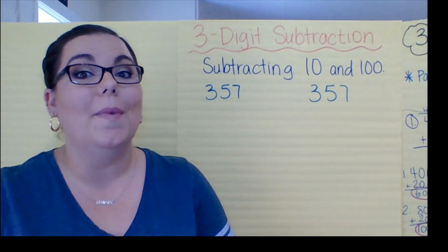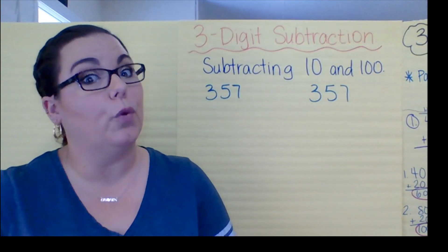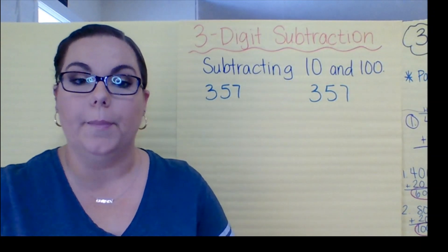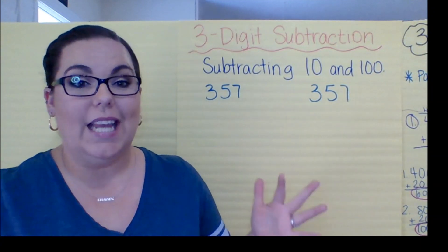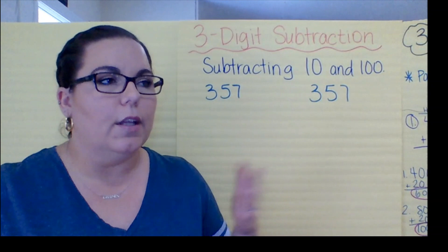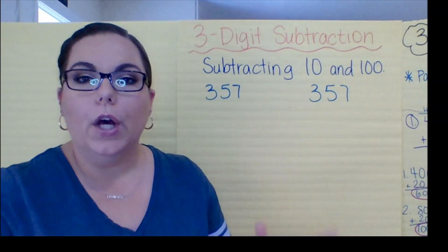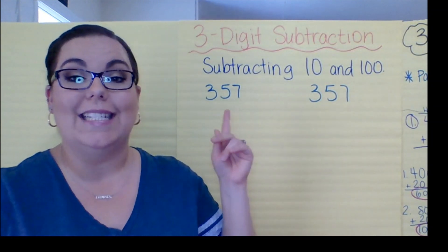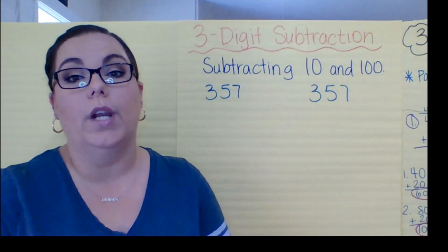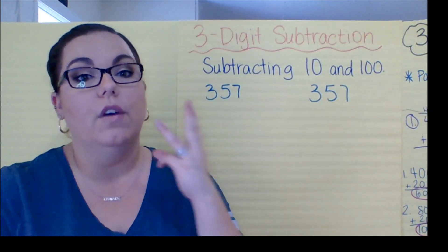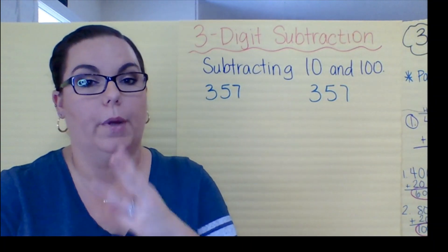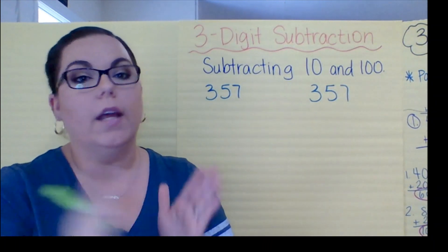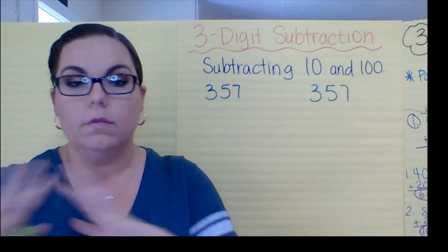We're also going to learn how to use the standard algorithm and to regroup with three digits. For today it's a little bit easy — we're going to start off kind of slow and just do subtracting 10 and 100 from three-digit numbers. That's it — simple, either 10 or 100.